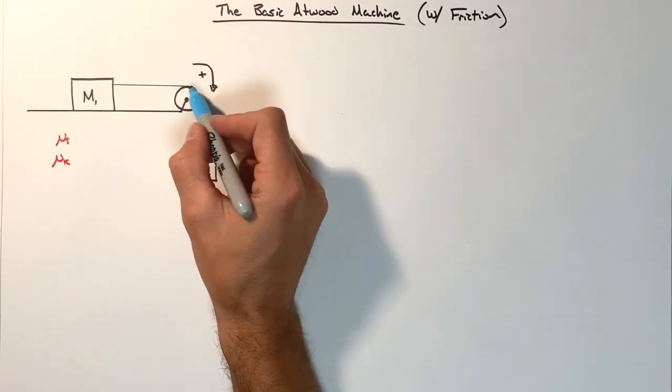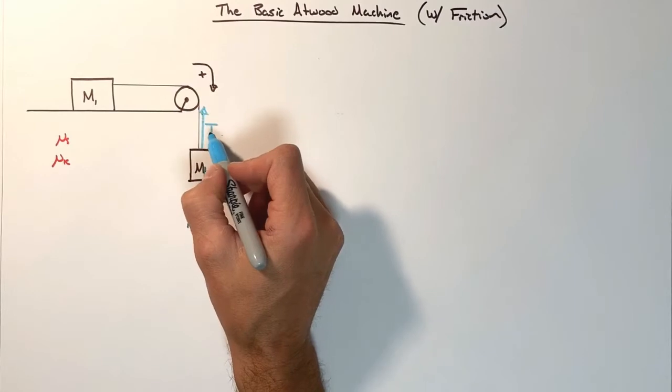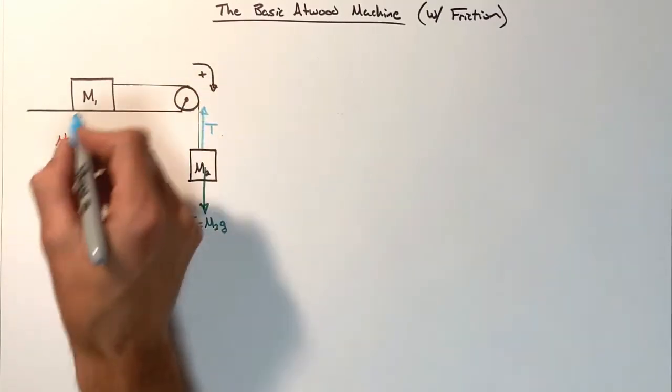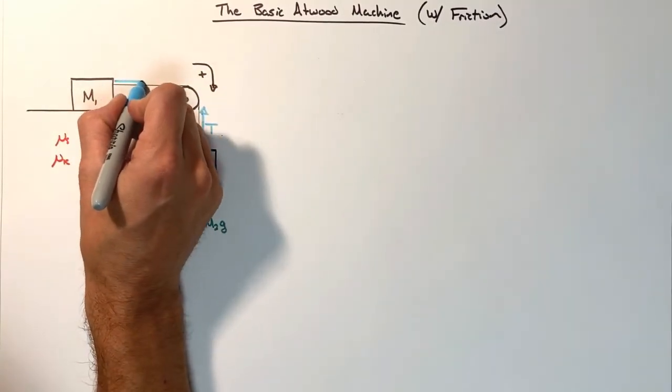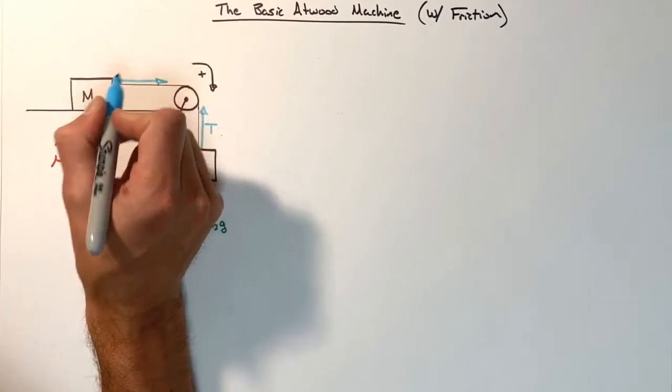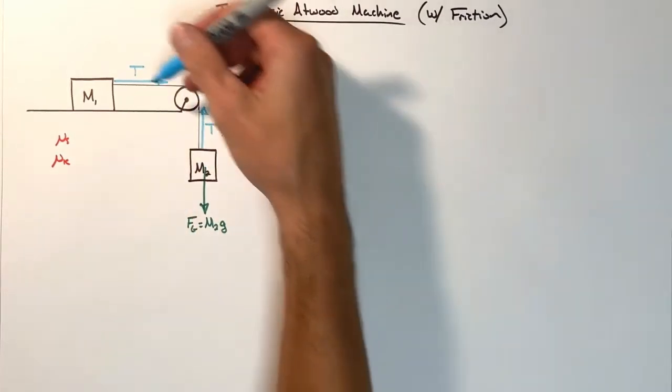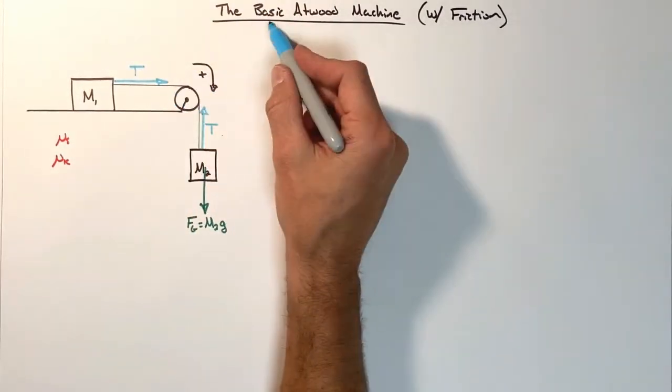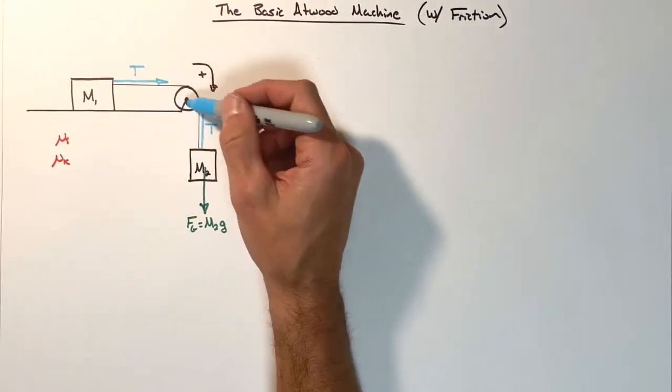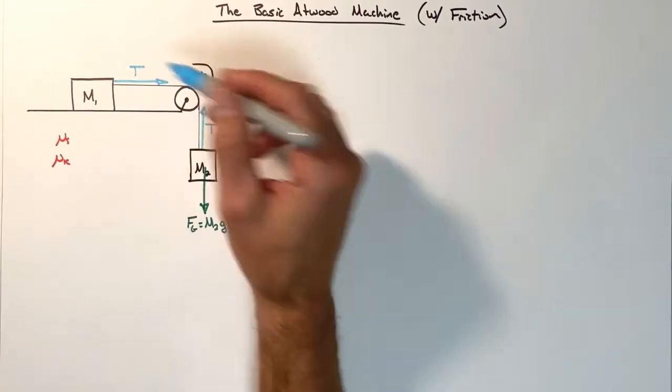Because this is a frictionless pulley, because the string has no mass, the tensions at opposite ends of the string will always be the same. As soon as we start putting mass in the string or friction in the pulley, that's not going to hold true. But right now, we're looking at the somewhat simplistic or basic case where there's no friction here and this has no mass.